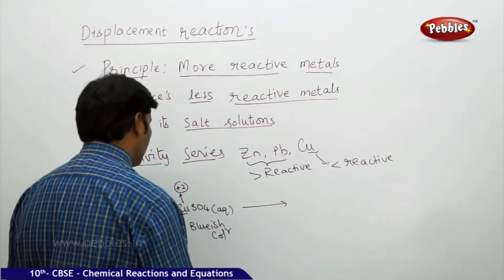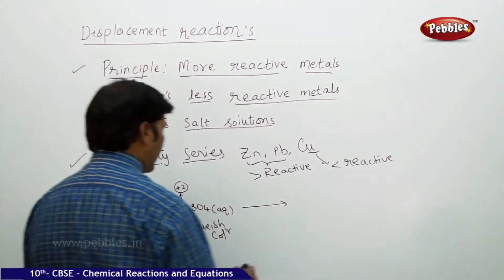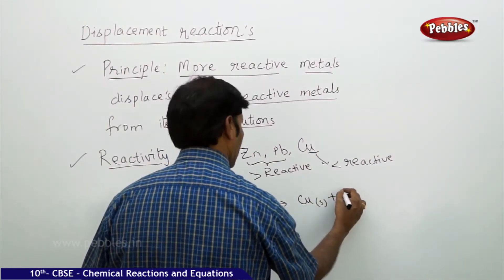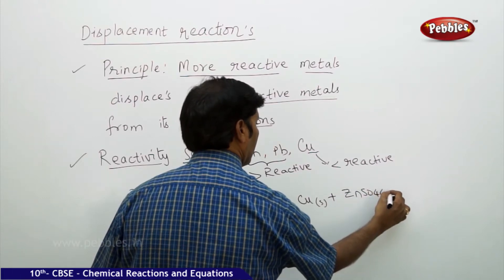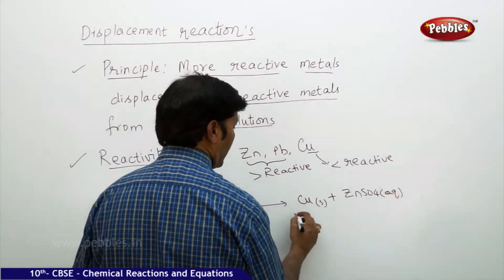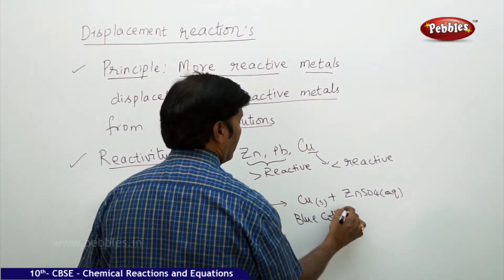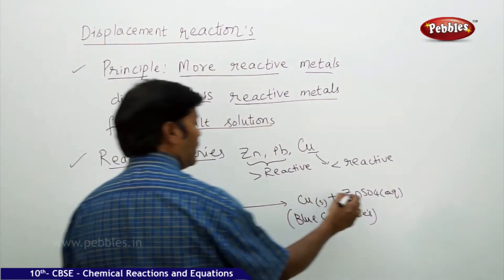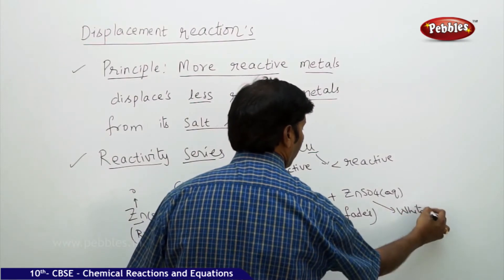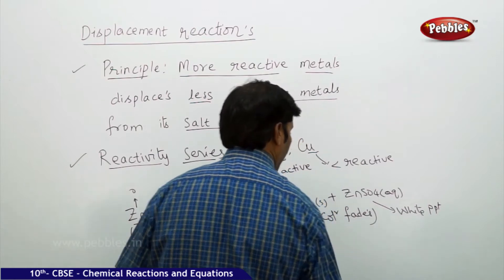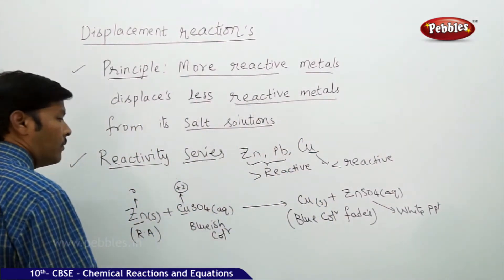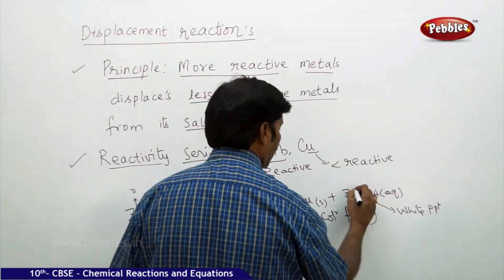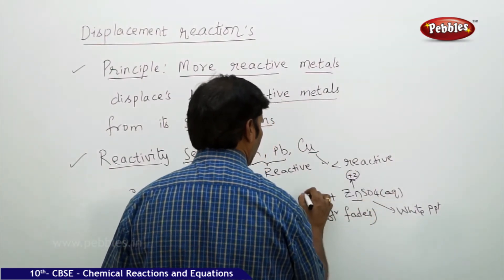This copper is getting reduced and zinc is acting as a reducing agent. Copper sulphate gets converted to copper solid plus zinc sulphate aqueous. The blue color fades and zinc sulphate forms a white precipitate. Zinc is oxidized to zinc sulphate where zinc is plus two, and copper is reduced to zero.